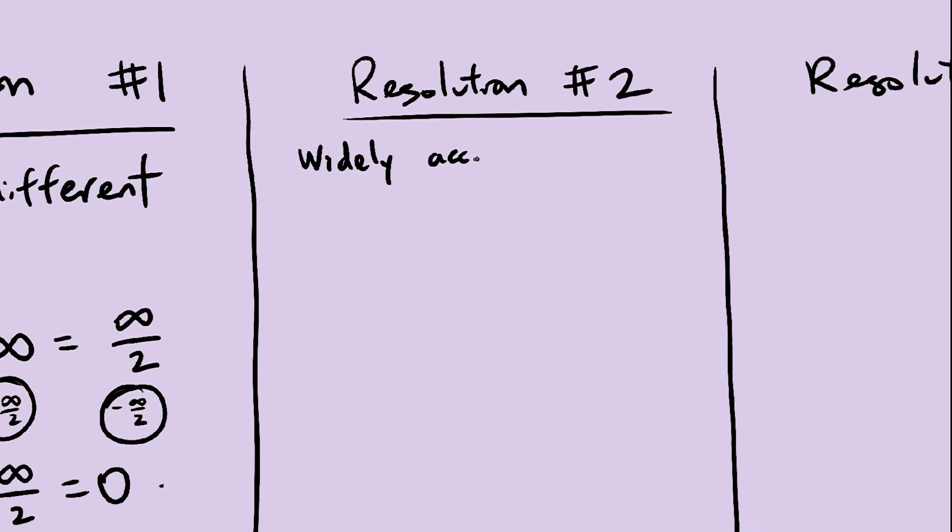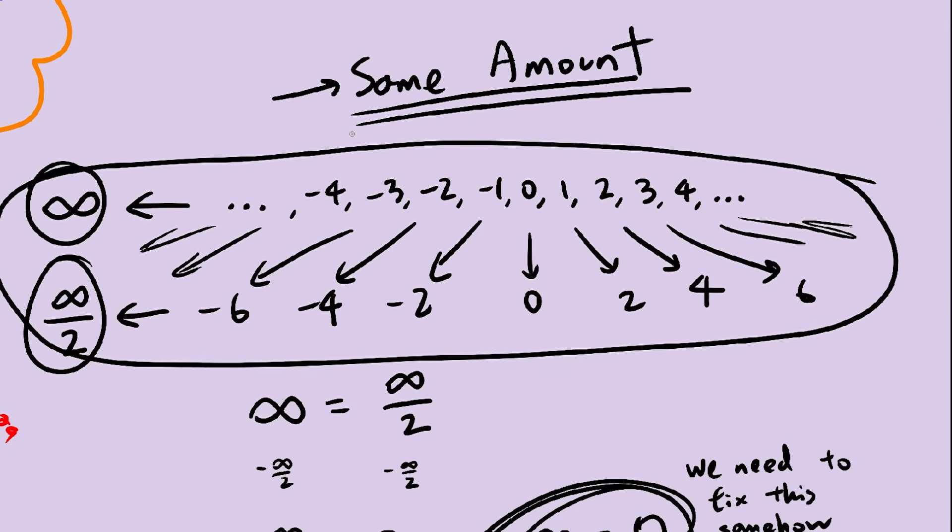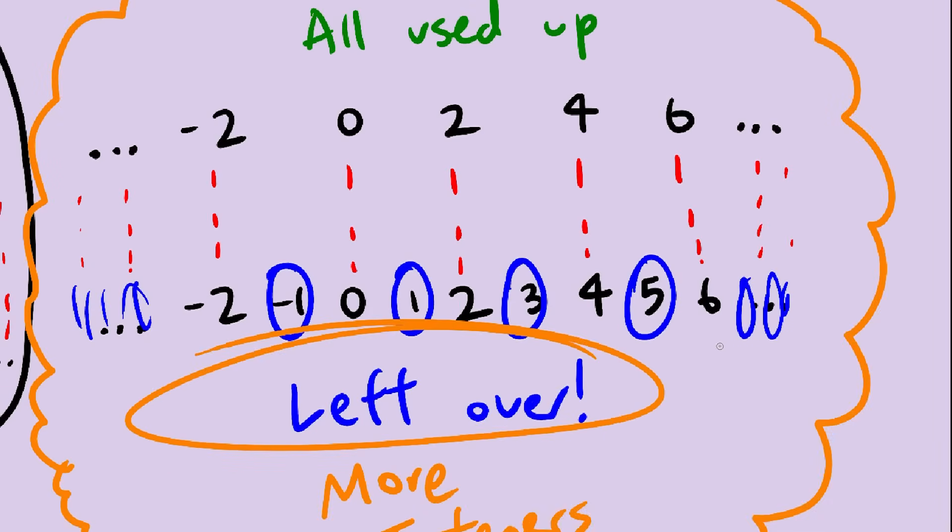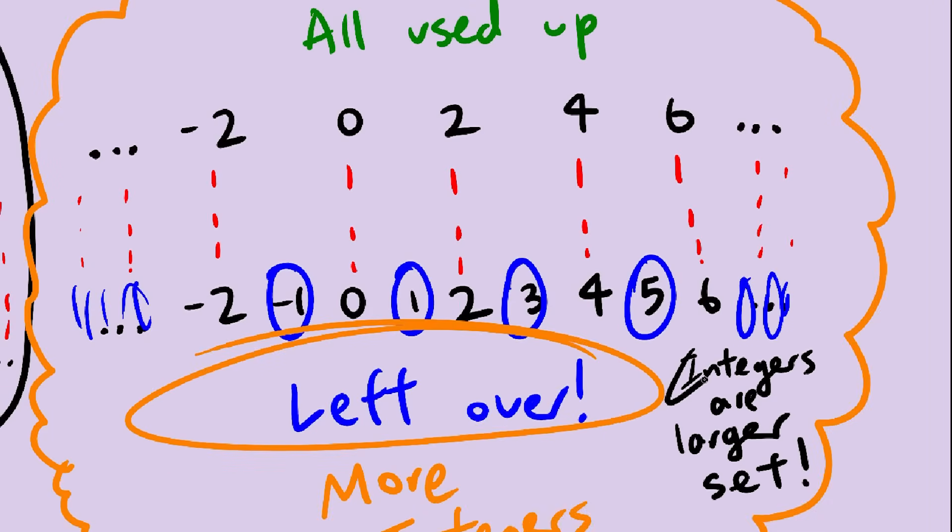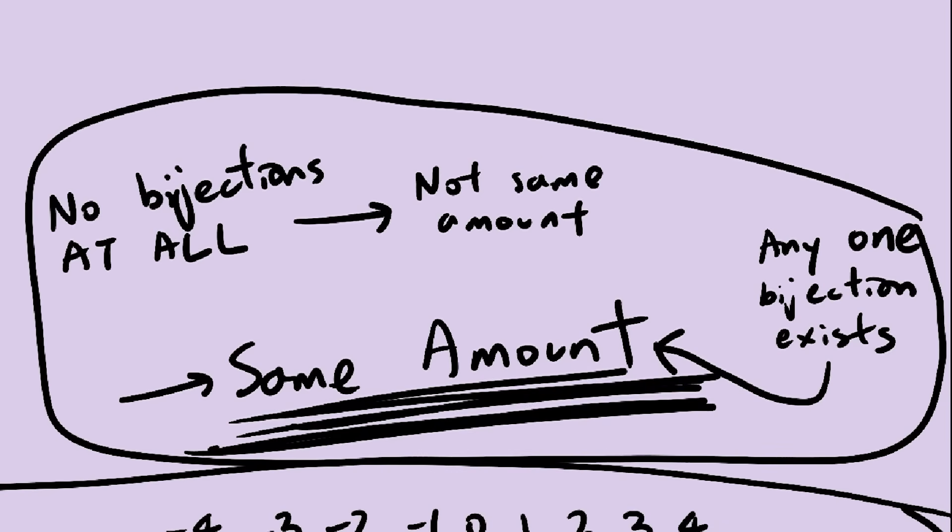Second way, the way you've probably been taught, if you can form a bijection, then you have the same amount of each. No more questions asked. Even if another bijection tells you that one set is larger, it doesn't matter. As long as one bijection exists, they're the same size, and if no bijections exist, they're not the same size. It's as simple as that.